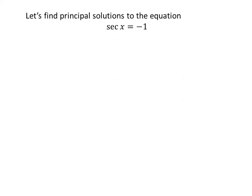Let us first find the principal solutions to the equation secant of x equals minus 1. We know the solutions to the trigonometric equation for which x is greater than or equal to 0 and less than 2π are the principal solutions.